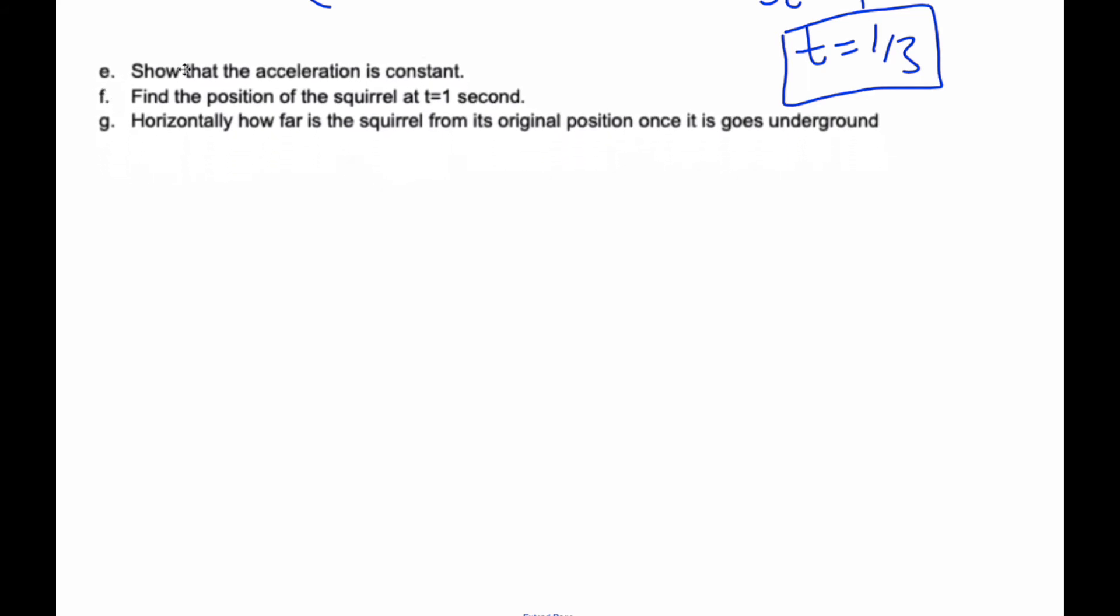Continuing on with part e, it says, show that the acceleration is constant. Well, if my velocity is equal to (t plus 1, negative 1), I know the acceleration is equal to the derivative of the velocity, which means I take the derivative of the top, which is the derivative of this is just going to be 1. The derivative of negative 1 is 0. Therefore, because it doesn't depend upon the time at all, therefore, it is constant. Acceleration is constant.